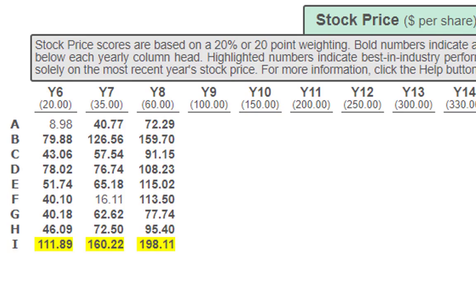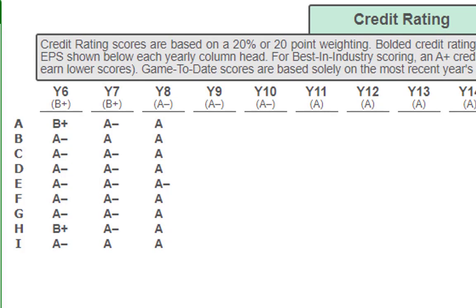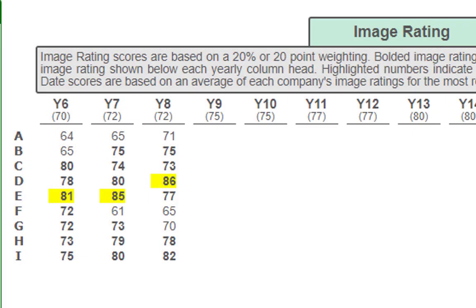Let's look at credit rating and image rating. For credit rating, everyone is at A, with only company E at A minus, which should be fine and won't hurt them. For image rating, everyone met expectations besides companies A, F, and G — and that might be a strategic choice, as maybe they're not worried about image rating. You do have to watch it though and not let it dip too low. Company D has the highest image rating at 86.